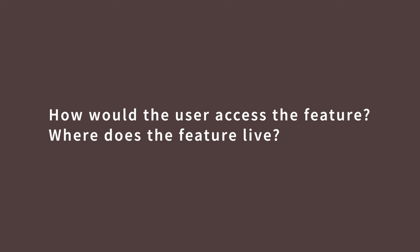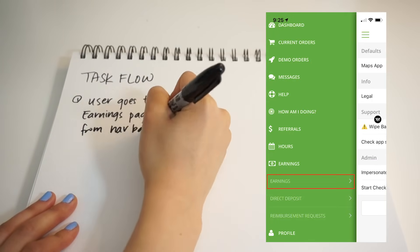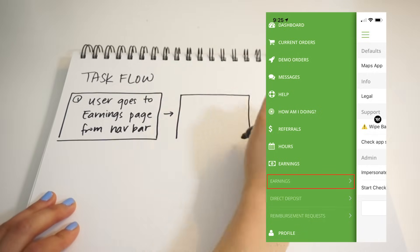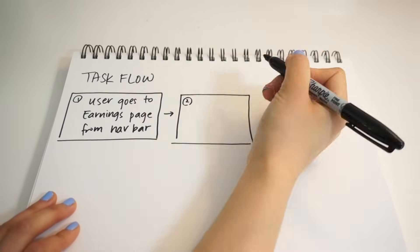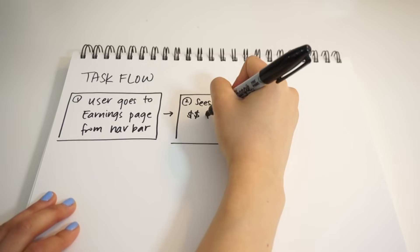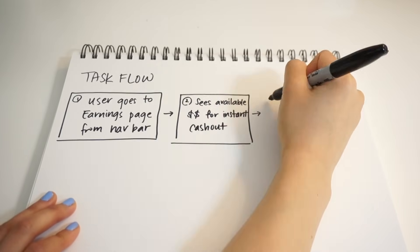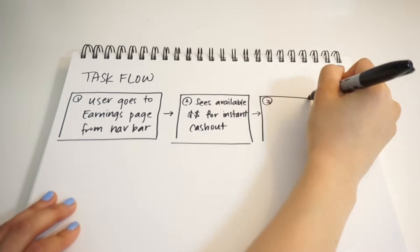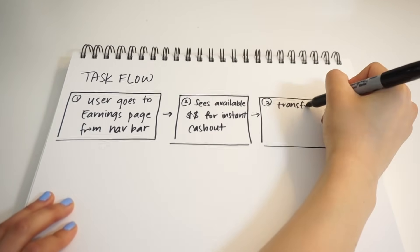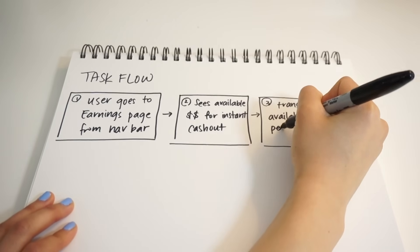In the Instacart Shopper app, that would be the earnings page where the shopper can view all their earnings. Second step, the feature would have a call to action — a button — with the available amount so the shopper knows how much of their earnings is eligible for instant payment. And step three would be to tap the button and transfer the available amount to their personal bank account.